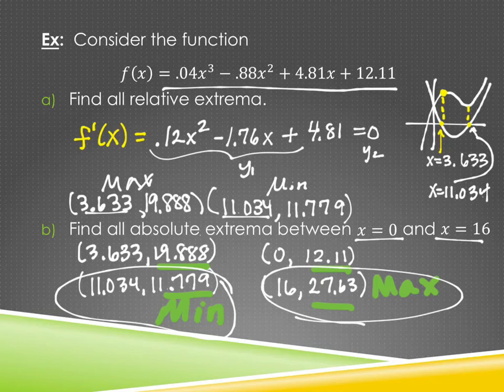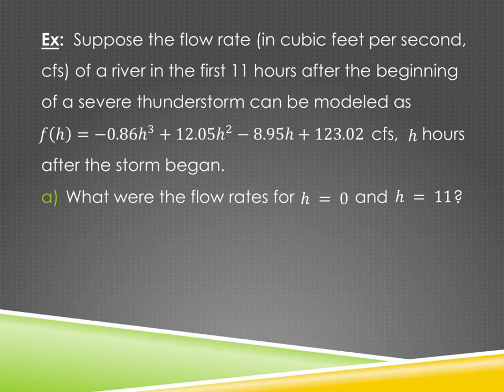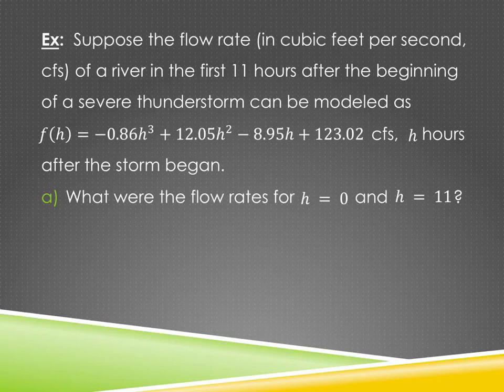Now we'll do a science example — probably physics. Suppose the flow rate in cubic feet per second (CFS) of a river in the first 11 hours after a severe thunderstorm can be modeled as F(H) = −0.86H³ + 12.05H² − 8.95H + 123.02 CFS, where H is hours after the storm began.